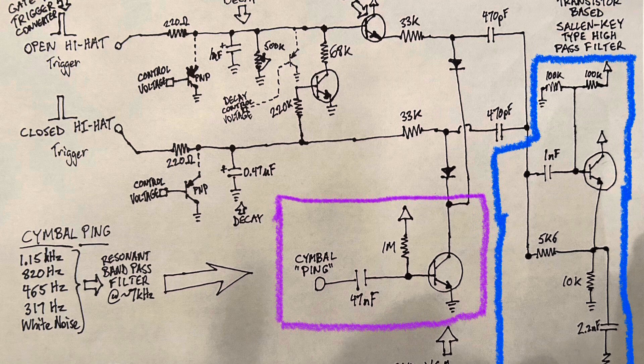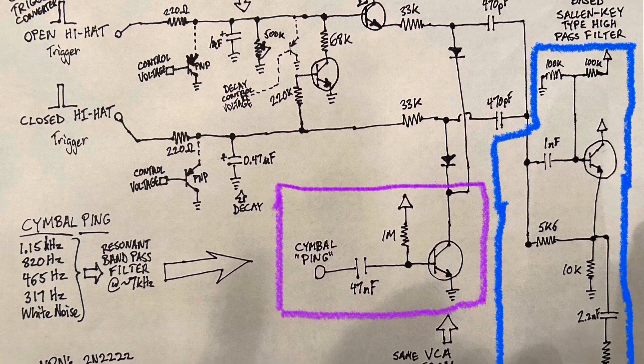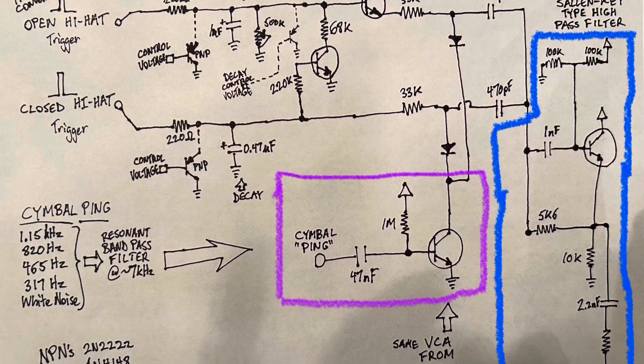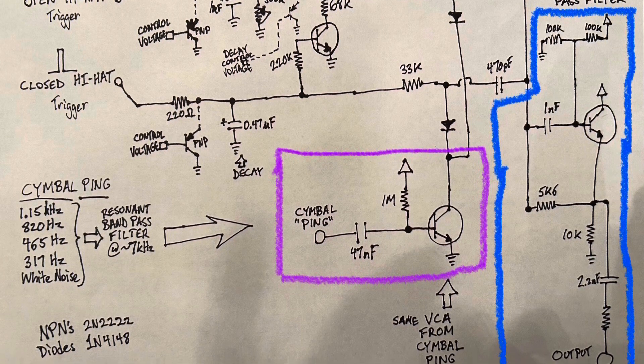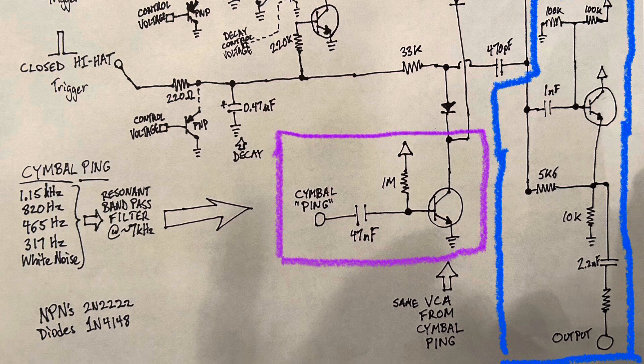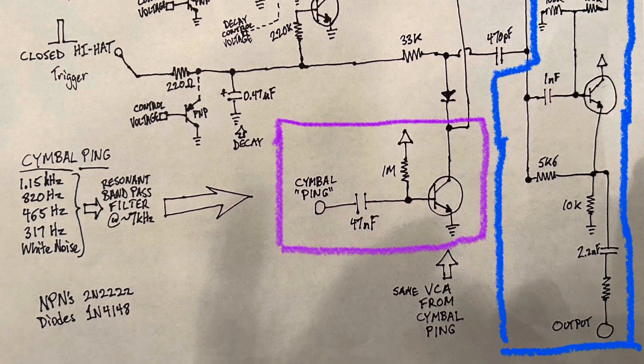The area is outlined in blue, which is the Salen key-resonating high-pass filter with positive feedback. And the purple area, which is the VCA, are already present in the circuit if you've built the cymbal circuit.